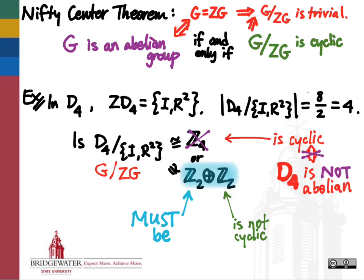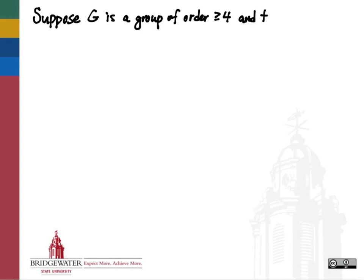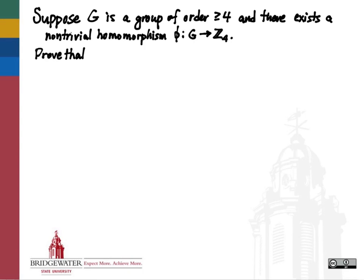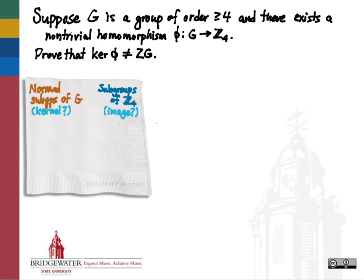Let's take a look at how this fact can be used in a different context. In this problem, we're given some very sparse information about a group g — it's a group that has at least four elements in it. We're also given that there exists a non-trivial homomorphism from g into the cyclic group of order 4, Z₄. What I want to do is prove that the kernel of this homomorphism cannot be exactly equal to the center of g.